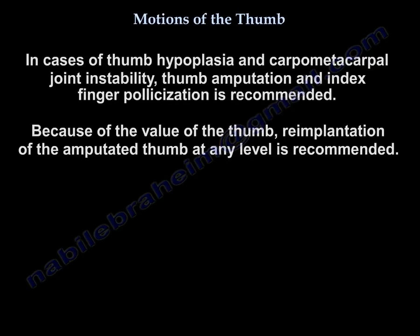In cases of thumb hypoplasia and carpometacarpal joint instability, thumb amputation and index pollicization is recommended. Because of the value of the thumb, re-implantation of the amputated thumb at any level is recommended.